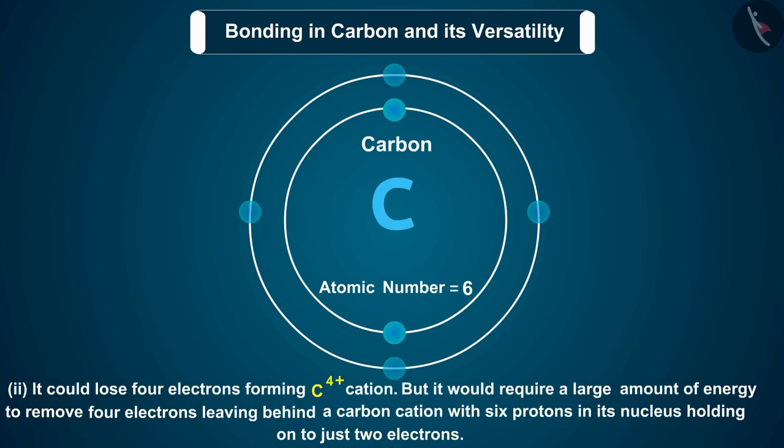Second, it could lose four electrons forming C4 plus cation, but it would require a large amount of energy to remove four electrons, leaving behind a carbon cation with six protons in its nucleus holding on to just two electrons.